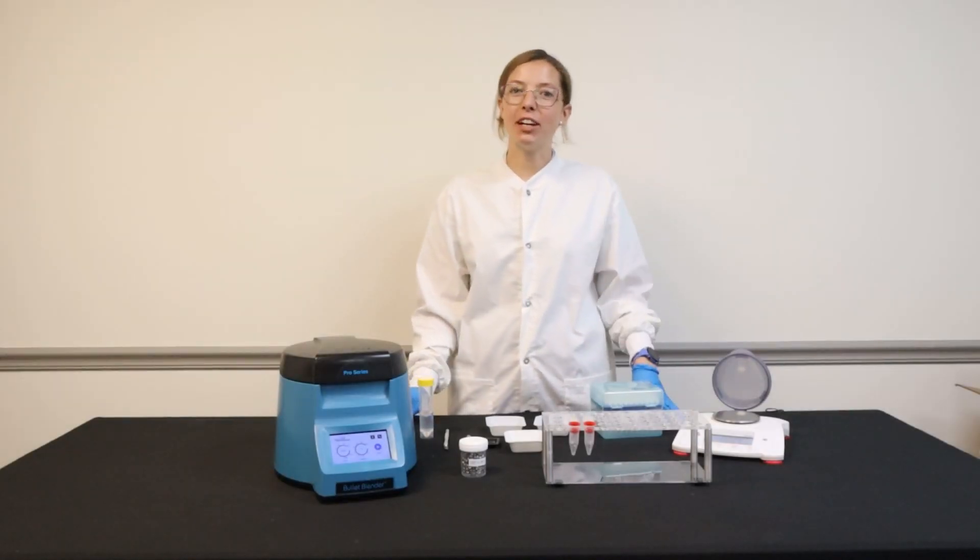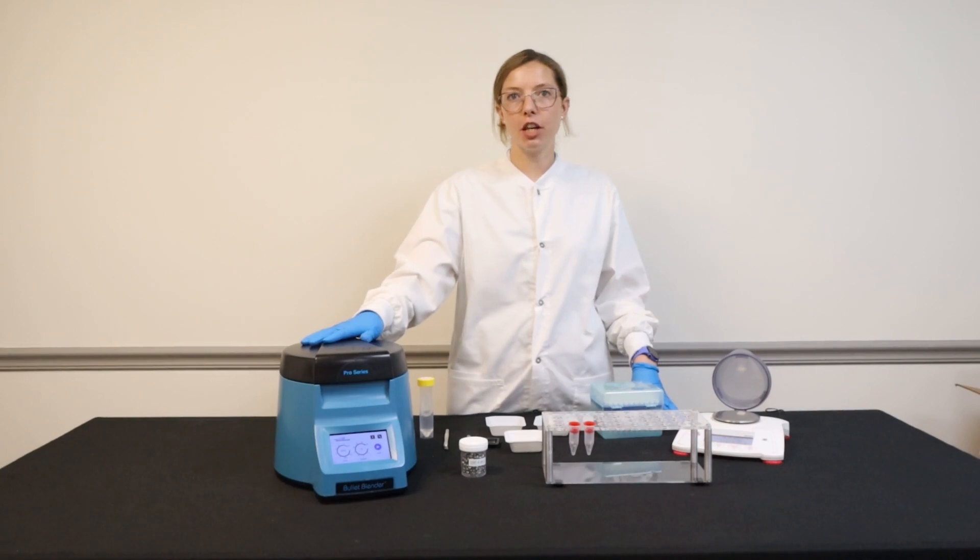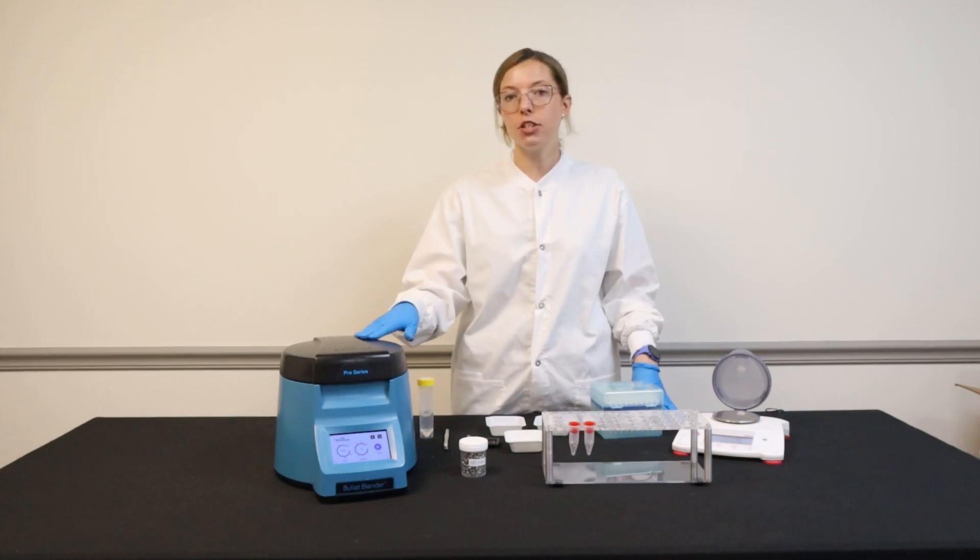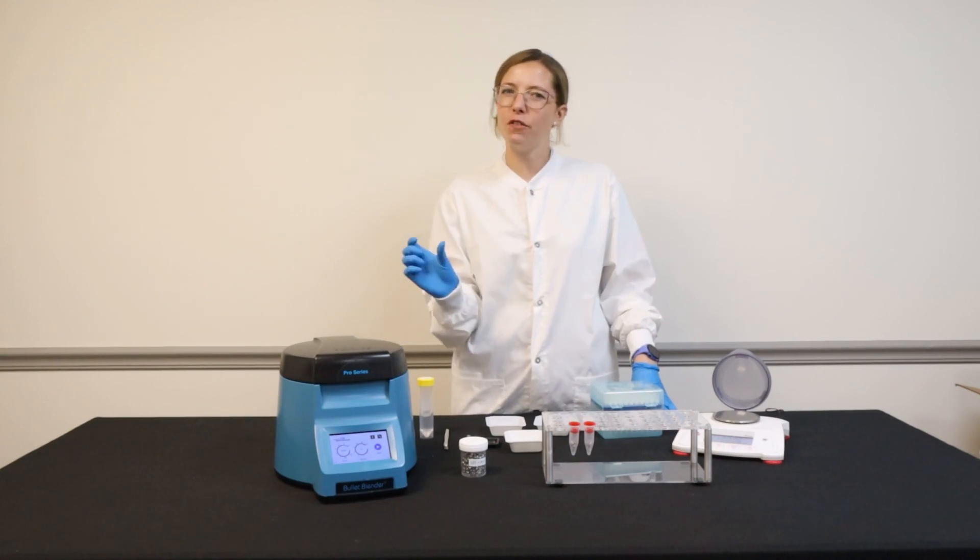Hi, my name is Nikki and I'm here with Next Advance using their 5E Bullet Blender to homogenize larger and tougher tissue samples. This instrument can handle up to 1 gram of tissue sample per tube and it's good for tougher samples like fibrous plant material, umbilical cords, or muscular tissue.